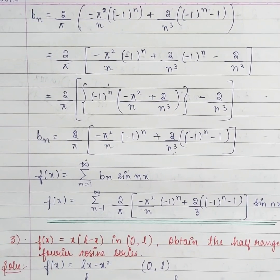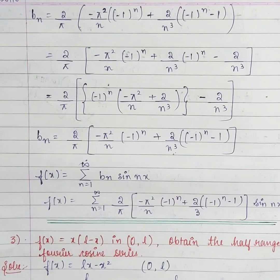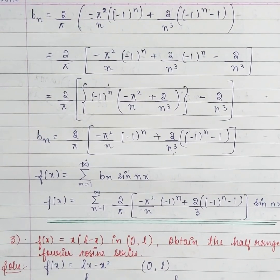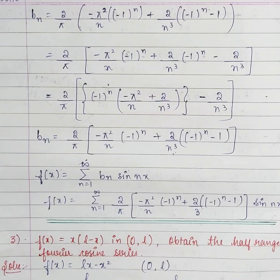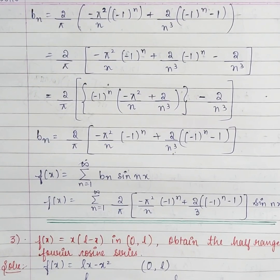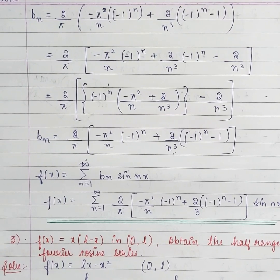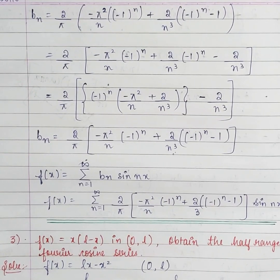In case the question says 'prove that', then you have to simplify completely. Otherwise you can just do basic simplification. So if the function asks for half range sine series, you find only BN. If it is a half range cosine series, you find A0 and AN.